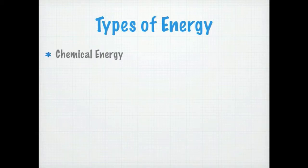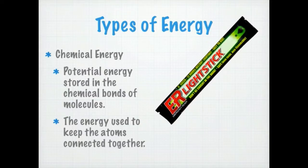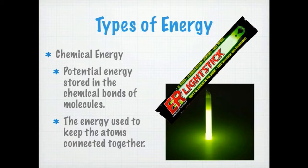Chemical energy is potential energy stored in the bonds of molecules. When atoms are joined together in a molecule, there's energy holding them together. Consider a light stick — inside it there are two liquids, one inside a capsule. When you bend the stick to break the capsule, the two liquids mix and a chemical reaction occurs. The energy stored within the chemical bonds of those liquids is released — in this case in the form of light. That stored potential chemical energy is converted into a different type of energy.